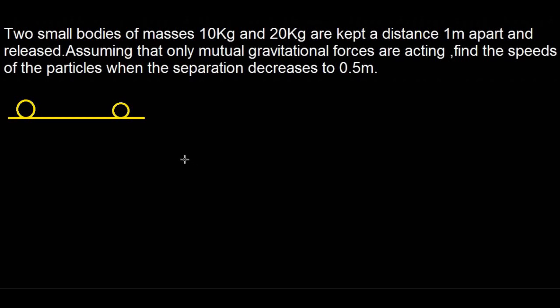Welcome everyone. In this video we have a question which says two small bodies of mass 10 kg and 20 kg are kept at a distance 1 meter apart and released, assuming that only mutual gravitational forces are acting on them. Find the speed of the particles when the separation decreases to 0.5 meters.